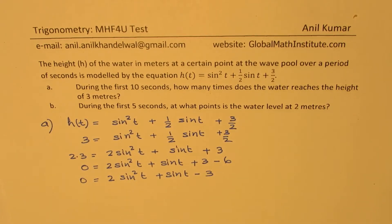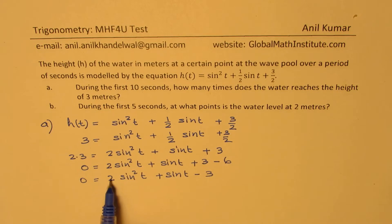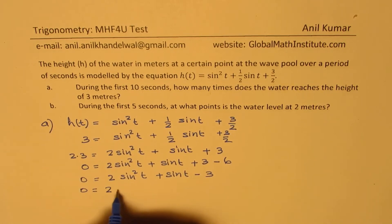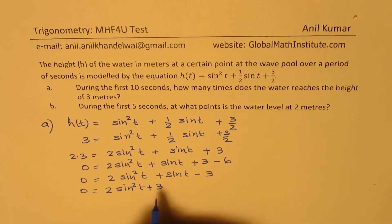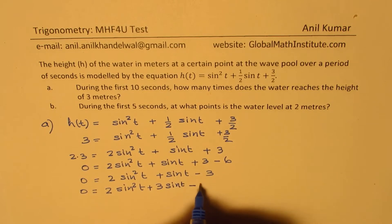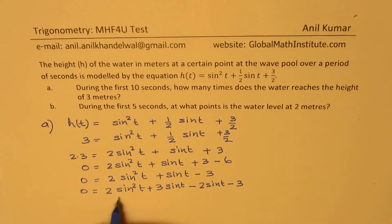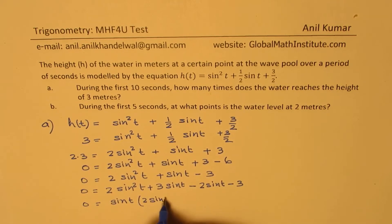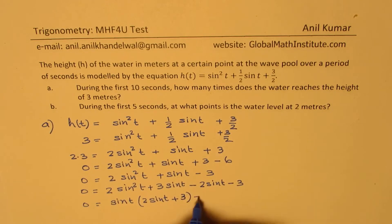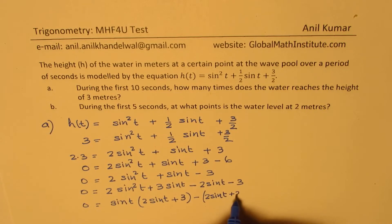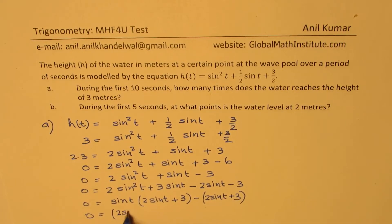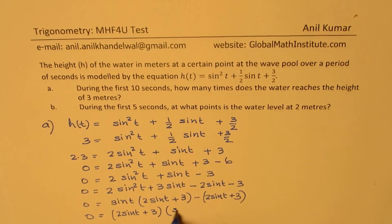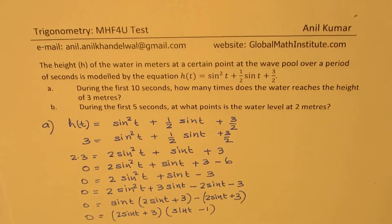This is a quadratic equation in sine, which we can factor. We're looking for a product of 2 × (−3) = −6 and a sum of 1, so 3 and −2 work. We can write this as 2sin²(t) + 3sin(t) − 2sin(t) − 3. Taking sin(t) common from the first two terms, we get (2sin(t) + 3). Now 2sin(t) + 3 is common, and we get (2sin(t) + 3)(sin(t) − 1). So this is your quadratic equation in factored form.